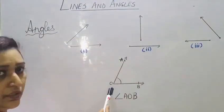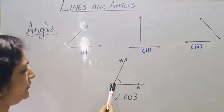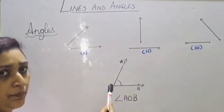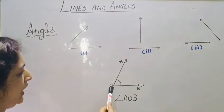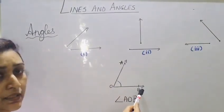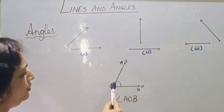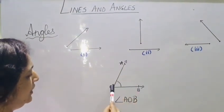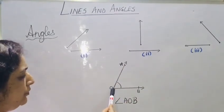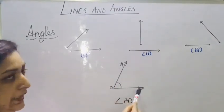But if we see the next figure, here also we have taken two rays, OA and OB. They are meeting at point O and forming angle AOB. So angles are formed by two rays when they meet at common end point.